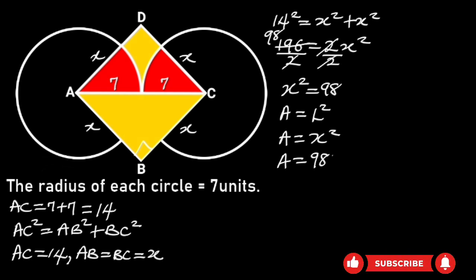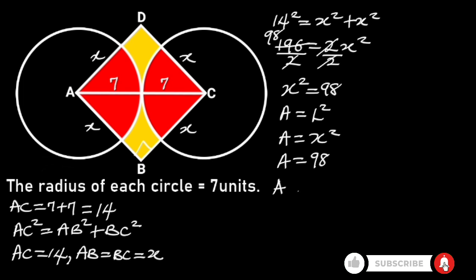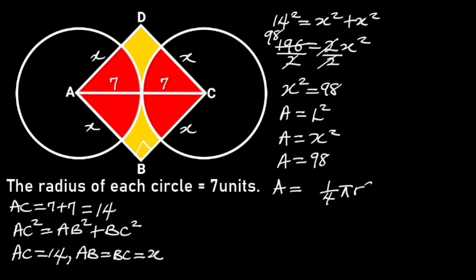Next, let's find the area of the 2 quarter circles. The area of a quarter circle is equal to one quarter times pi times radius squared. Since we are looking for the area of the 2 quarter circles with equal radii, the area will be 2 times one quarter pi radius squared. 4 divided by 2 is 2, so the area of the 2 quarter circles is equal to one half pi radius squared.